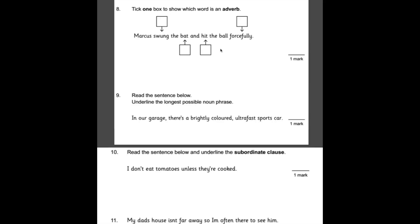Number eight, tick one box to show which word is an adverb. You should know that an adverb describes a verb. It describes when, where, or how the verb is taking place. So the verb in this sentence is hit. And how did Marcus hit the ball? He hit it forcefully. So that would be the adverb in this sentence.